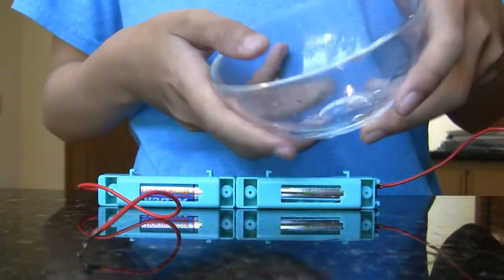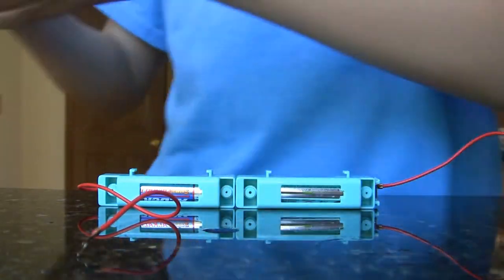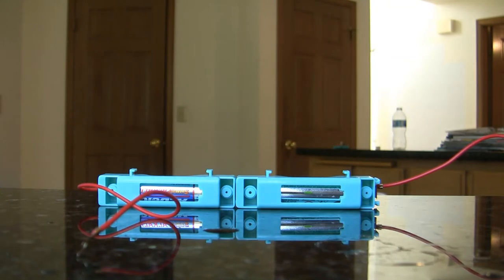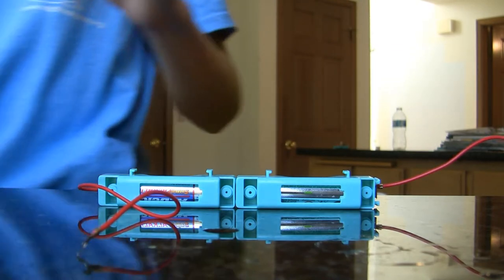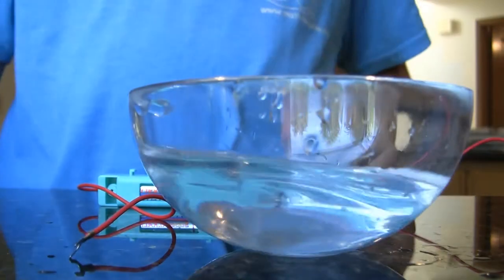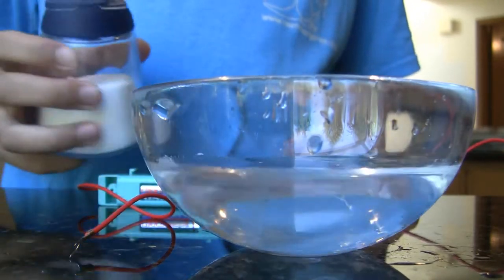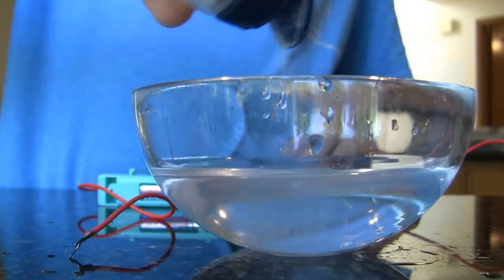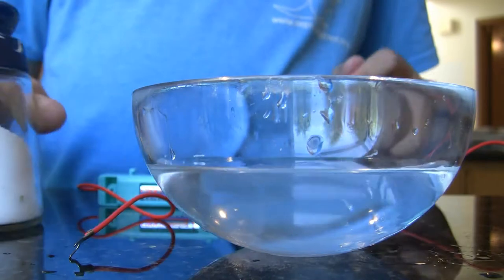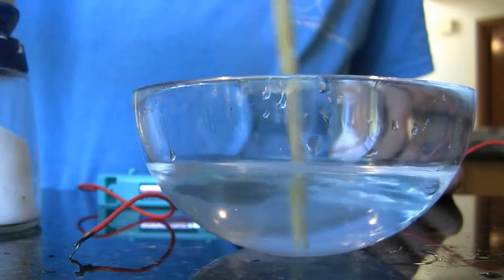So first, we take some water and put it in the bowl. I've got some water here. You also need some salt for this. Then you pour the salt in and use something to stir it.